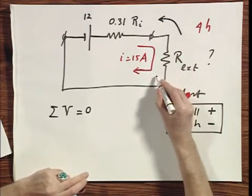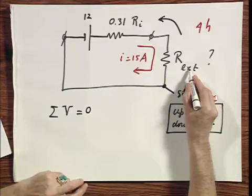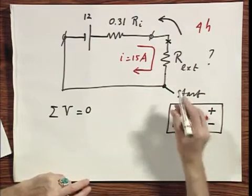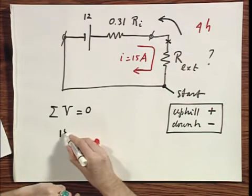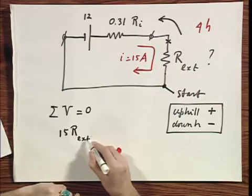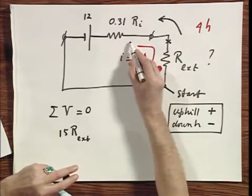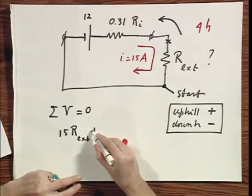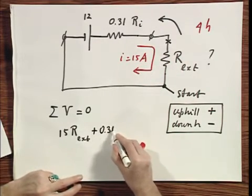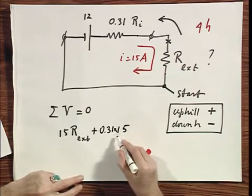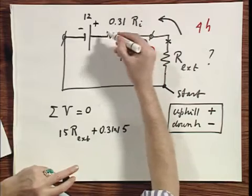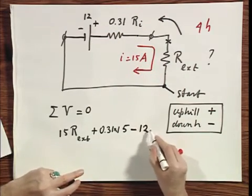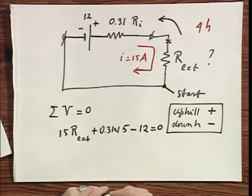So, be careful. The current comes to me, the resistance is R external, so I'm going up in potential. The potential here is higher than here, uphill is plus. So I get fifteen times R external. Now the current here is also coming to me. So I also go from a lower potential to a higher potential. So I get plus O point three one times the same fifteen amperes. But here, now I go down in potential. And when I go down in potential, we agreed it would be a minus sign.